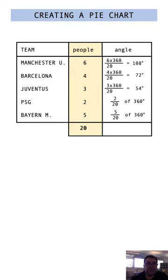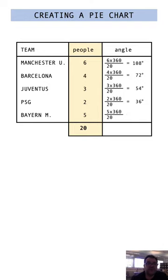Next, 2/20ths of 360: 2 on top, 20 on the bottom, times 360 gives you 36. And the last one, 5/20ths of 360: 5 on top, 20 on the bottom, times 360 gives you 90 degrees. And that should all add up to 360 degrees.